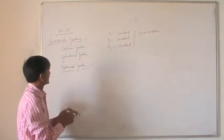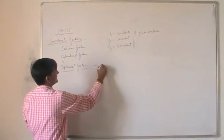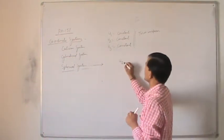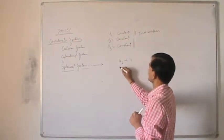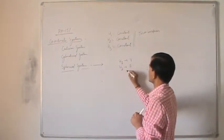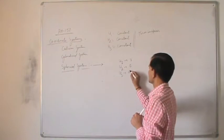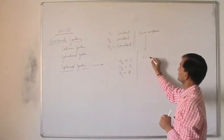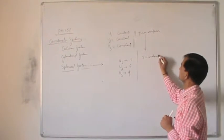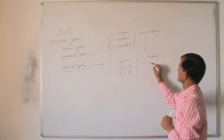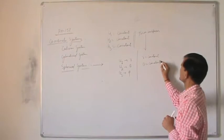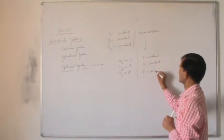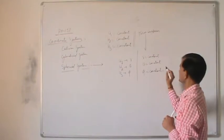Now we are coming to the spherical coordinate system. In the spherical coordinate system, u1 is R, u2 is theta, and u3 is phi. The three surfaces are: R equals constant, theta equals constant, and phi equals constant.